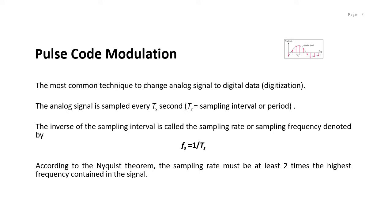Pulse code modulation (PCM) is the most common technique to change an analog signal to digital data, also known as digitization. In PCM we have an encoder and decoder. At the encoder we have three processes: sampling, quantization, and encoding. The first step is sampling. The analog signal is sampled every Ts seconds, where Ts is the sample interval or period. The inverse of the sampling interval is called the sampling rate or sampling frequency, denoted by Fs, where Fs equals one over Ts. According to the Nyquist theorem, the sampling rate must be at least twice the highest frequency contained in the signal.